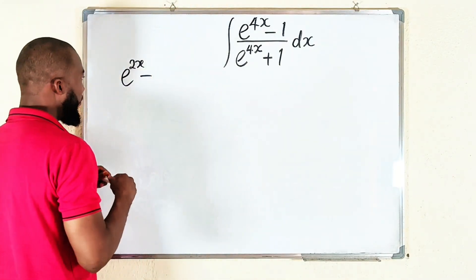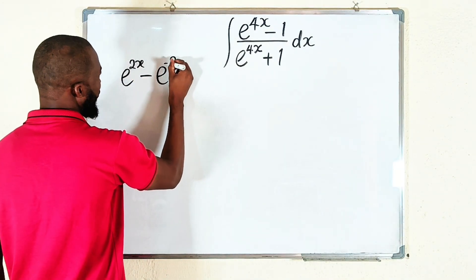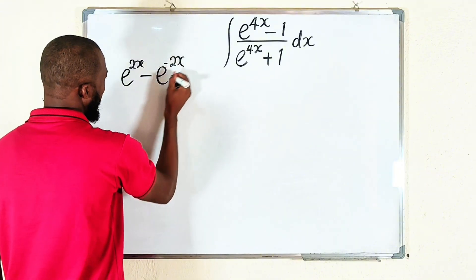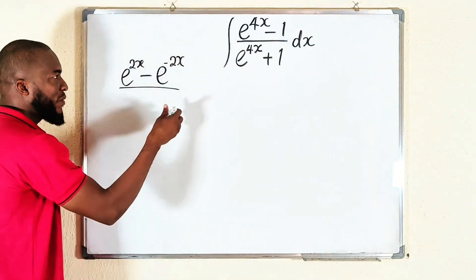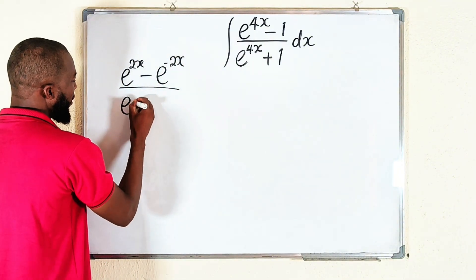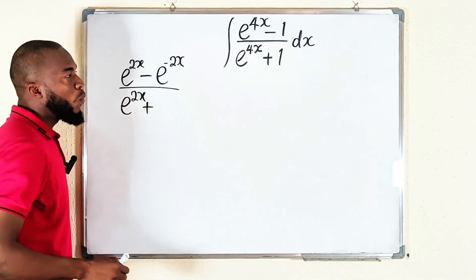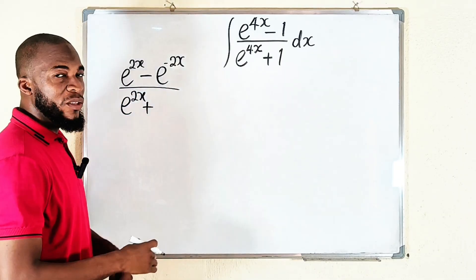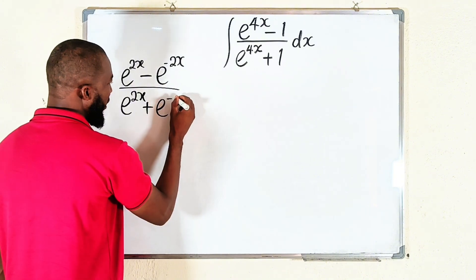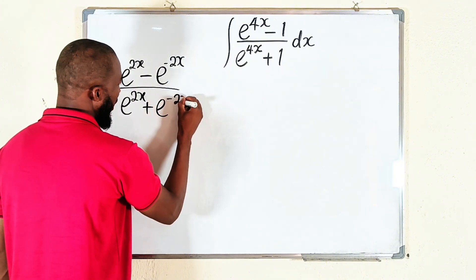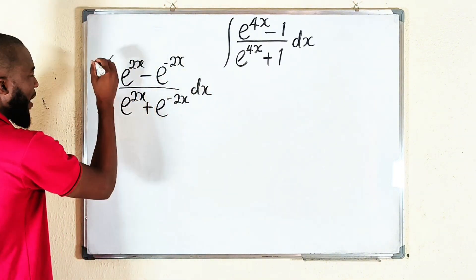We do the same thing for the bottom. If you divide e^(2x) + 1 by e^(2x), you get e^(2x) divided by e^(2x), which is 1, plus 1 divided by e^(2x), which is simply e^(-2x), with respect to x.